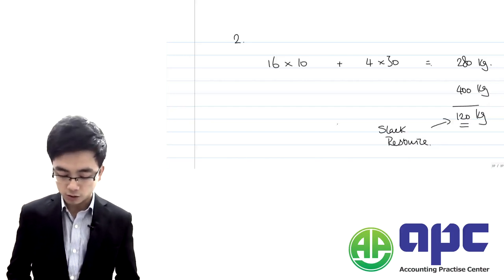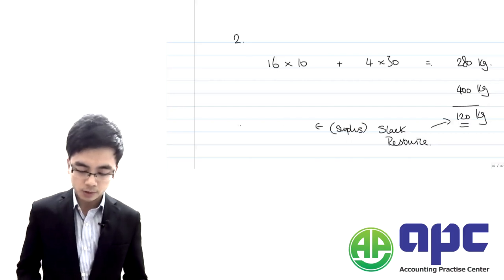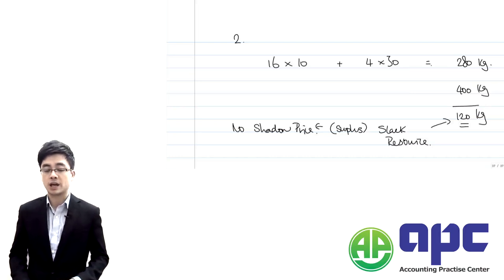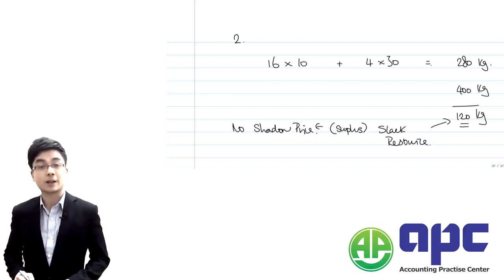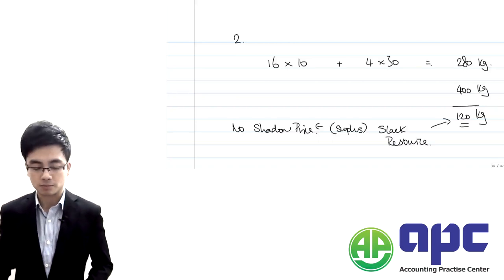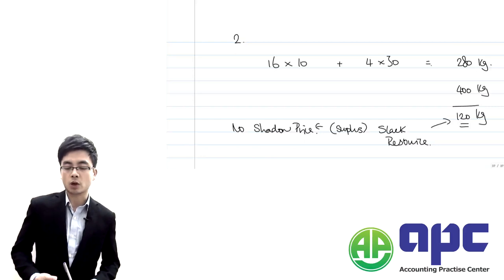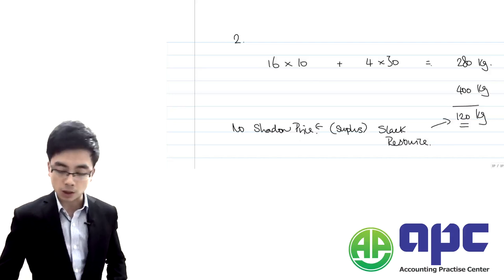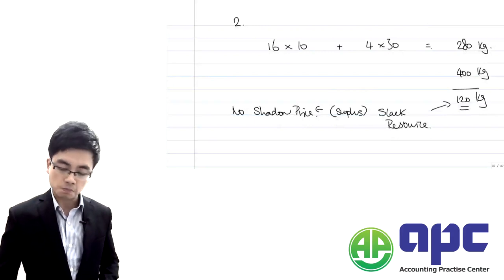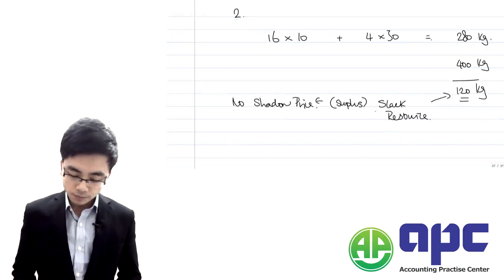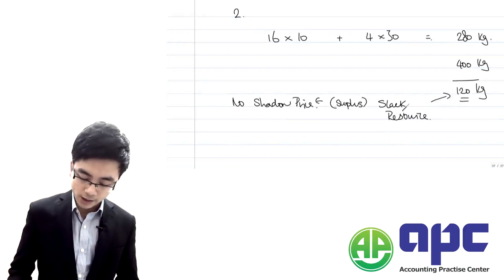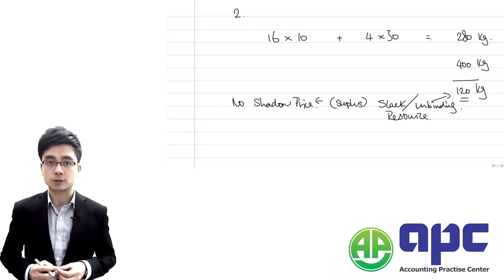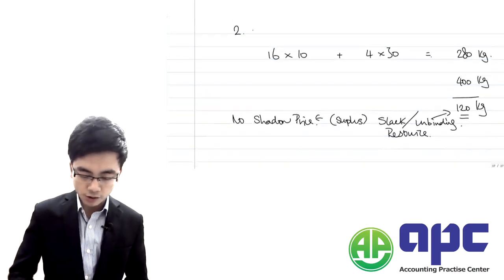Because we have 120 kilos of raw material left over, this is a slack resource — meaning there is a surplus. There is no shadow price for slack resources, because we don't need to outsource or pay a premium; we already have more than enough. This surplus may result in idle time or unused materials within the company.